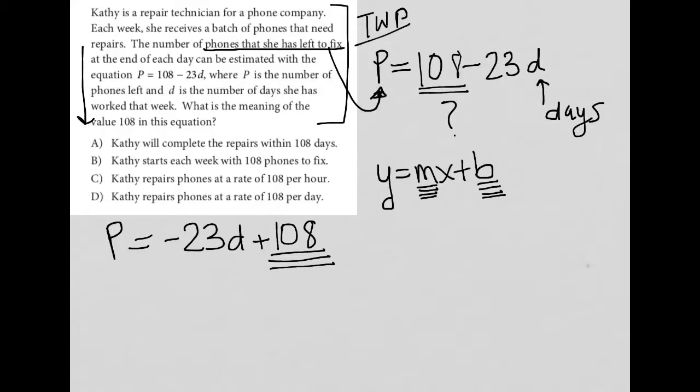That's how you would interpret this, where my m or rate of change is negative 23, so 23 phones per day. We know that D represents days. And 108 is my y-intercept, which really just means what's the p-value when D is 0. So at 0 days worked, she has 108 phones remaining.